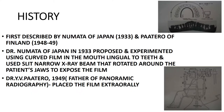Panoramic radiography was first described by Numata of Japan in 1933 and Patero of Finland in 1948 to 1949. Dr. Numata of Japan in 1933 proposed and experimented using a curved film placed lingual to the teeth, and he used a slit narrow x-ray beam that rotated around the patient's jaw to expose the film.